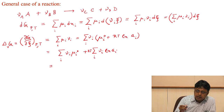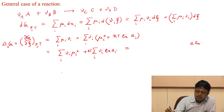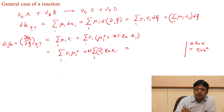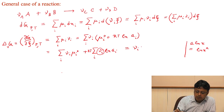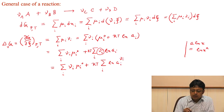We already know that νᵢ ln(aᵢ) can be rewritten using the logarithm rule: ln(X^A) = A ln(X). So we can use the factor νᵢ as a power of the logarithmic term. This allows us to write the sum as: sum over i of νᵢ μᵢ⁰, plus RT times the sum of ln(aᵢ^νᵢ).